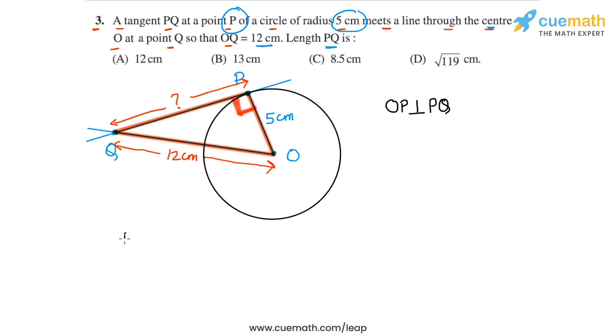So using the Pythagoras theorem, we have PQ square is equal to OQ square, the hypotenuse is OQ. So OQ square minus OP square, OP is the other side. Now let's plug in the values. So OQ is 12 centimeters. So OQ square is 12 centimeters square minus OP is 5 centimeters. So 5 centimeters square.